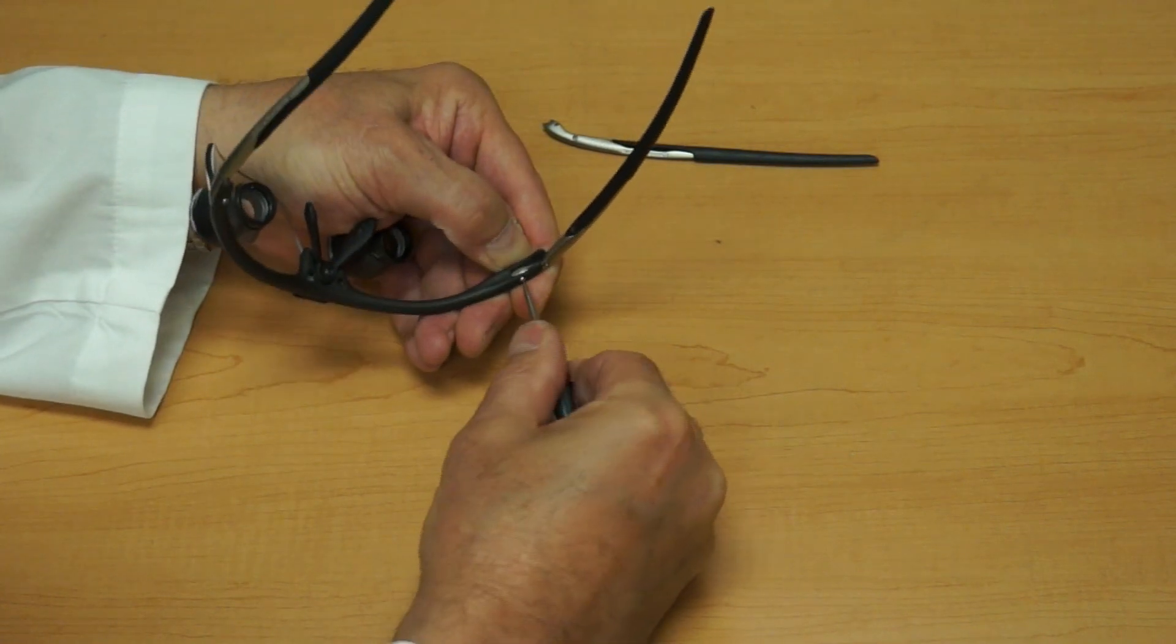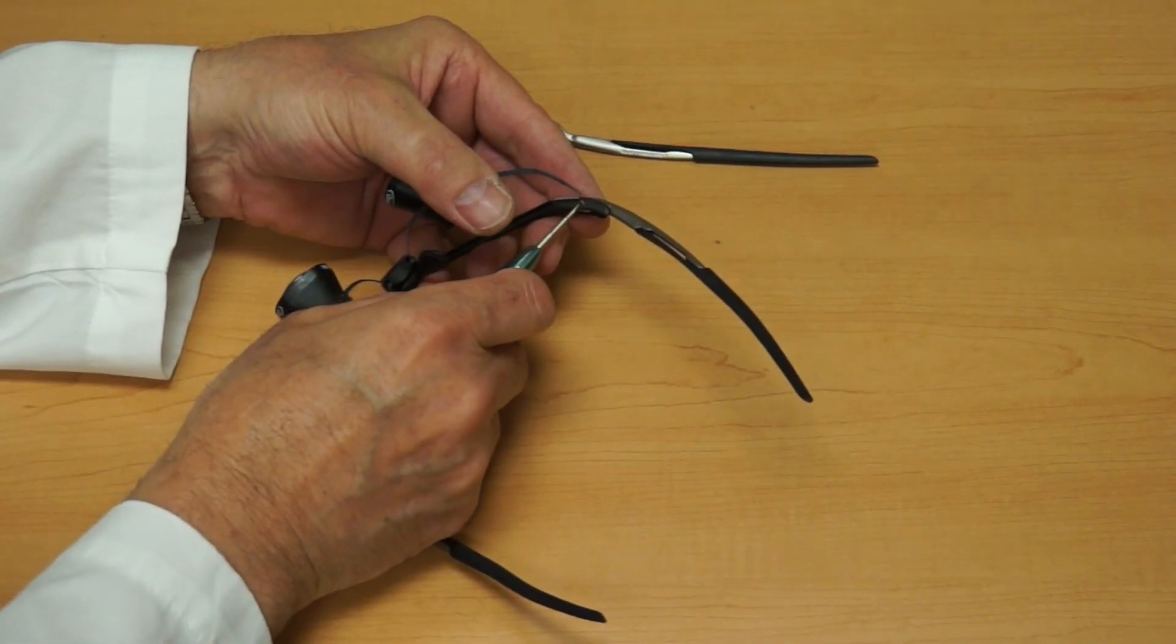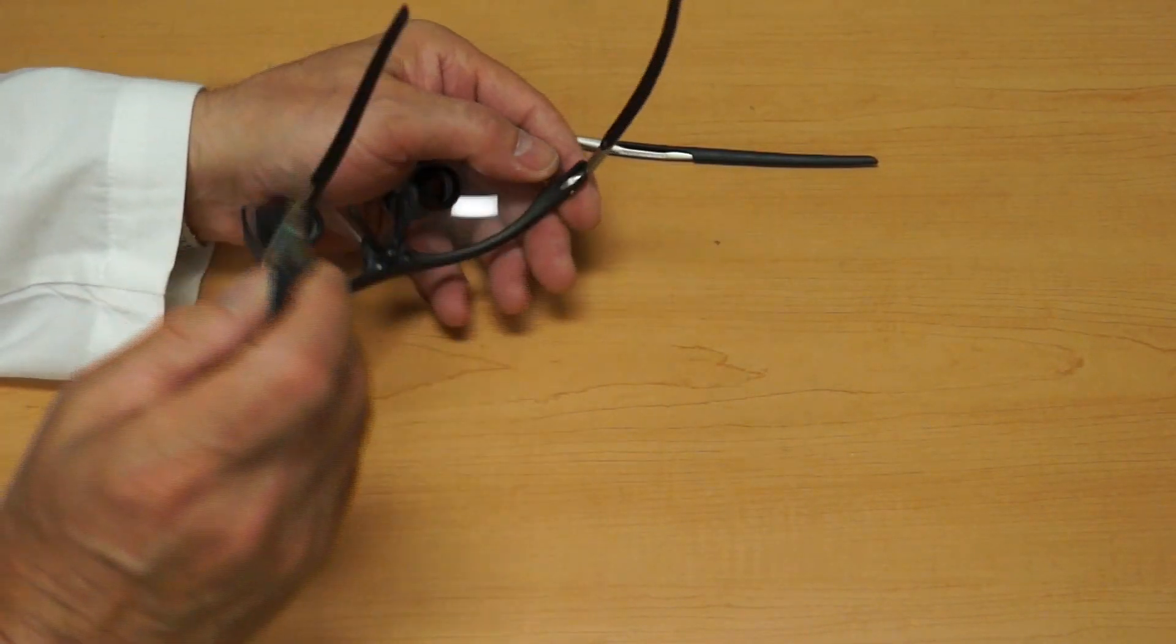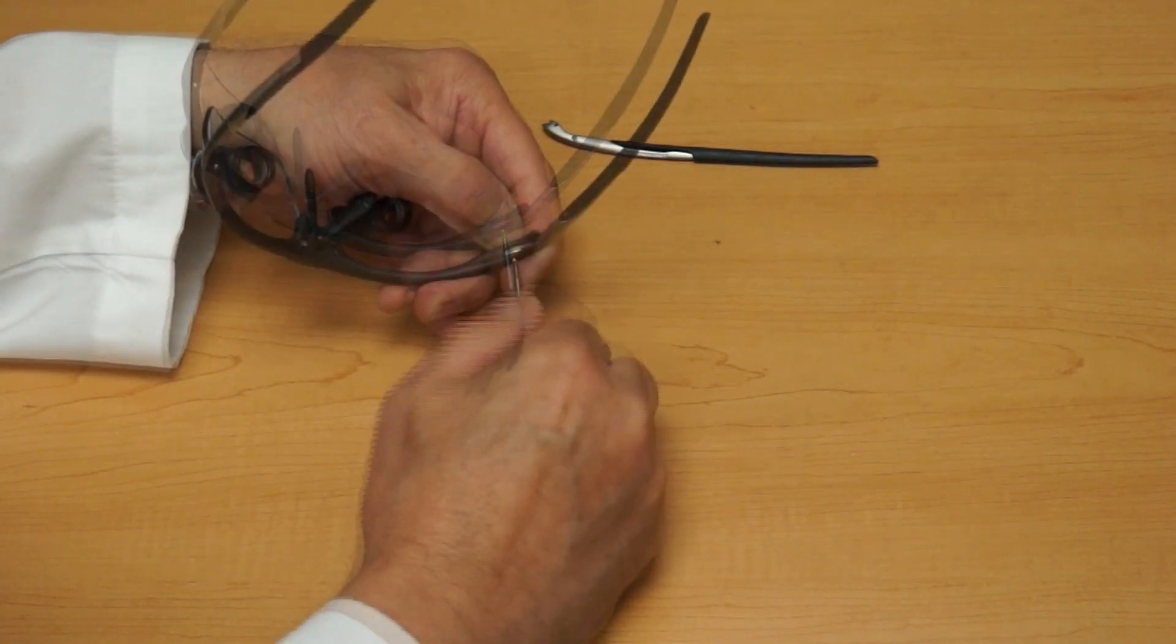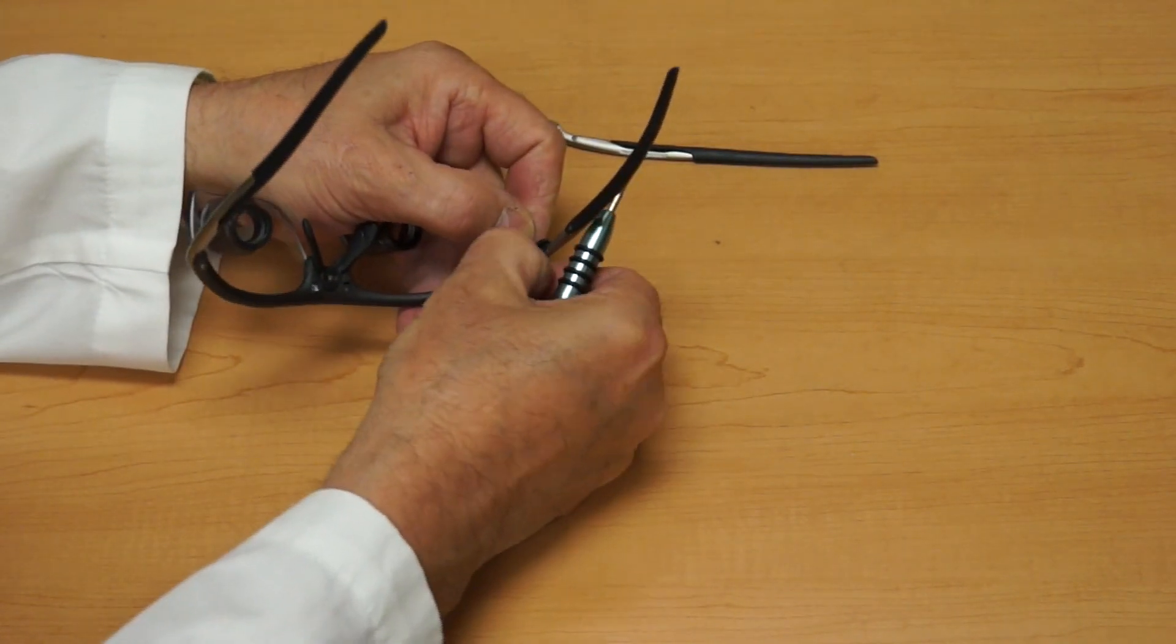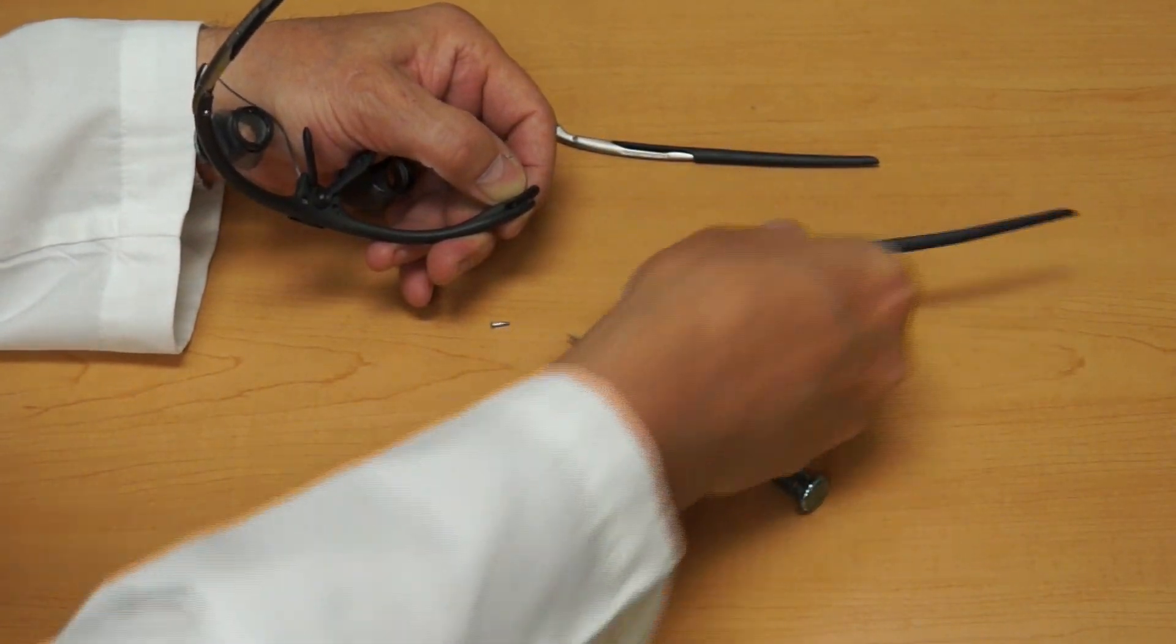Begin by removing that. Be careful, on the bottom side is a bushing that you'll want to keep in the frame. I put my thumb up against it. Take the screw out and remove the whole hinge and temple piece.